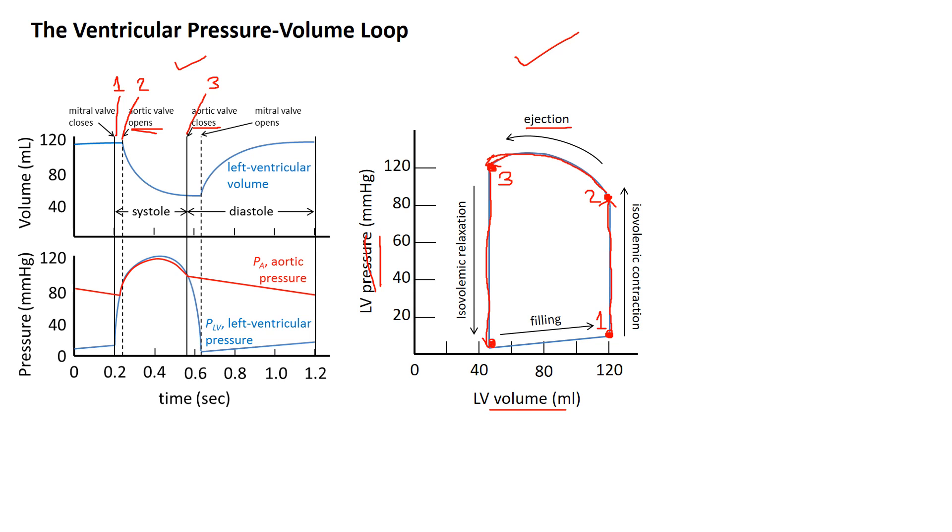The next phase is the filling phase. That happens when the mitral valve opens, here on the right, here on the left, point number four on these plots. The ventricle fills right back up again, and we go around the loop again.